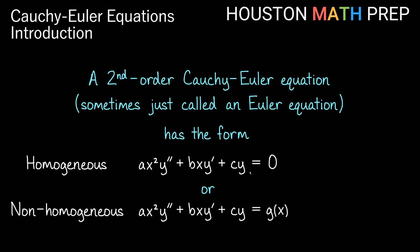How to easily recognize that you have an Euler equation: the power of x is the same as the order of the derivative in each term. So there's no x with just cy, a single power of x with the first derivative, and the second derivative term has an x squared. In this video, we're going to focus on solution methods for the homogeneous equations. We also have a video next in our series about solving the non-homogeneous versions using variation of parameters.